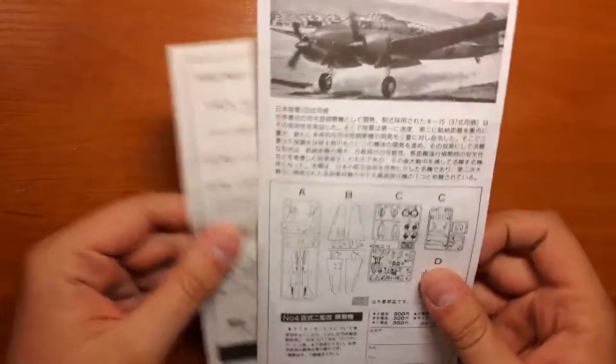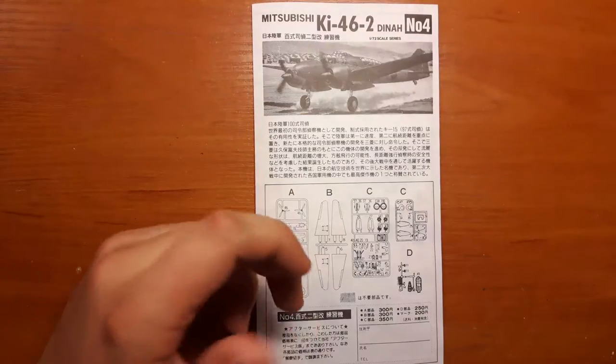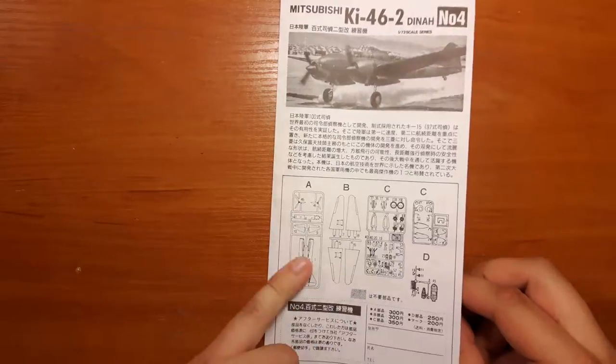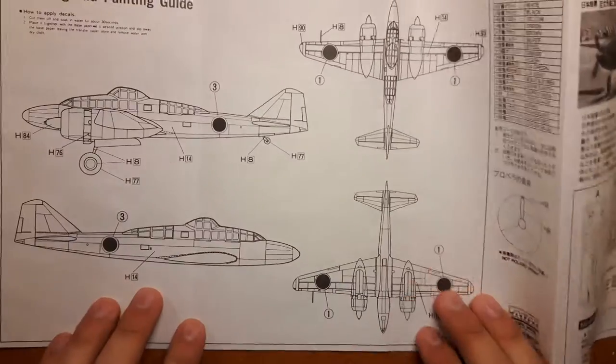Now we're going to check instructions. Japanese and English text as always. The part location, and what's on the other side? Oh yeah, markings and paint schemes. Seems all orange, same with the propeller, and the paint chart.